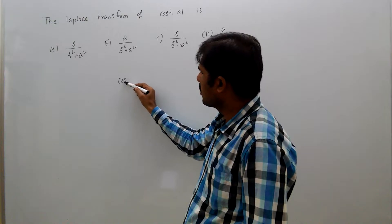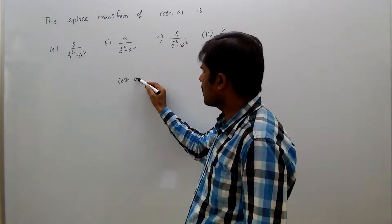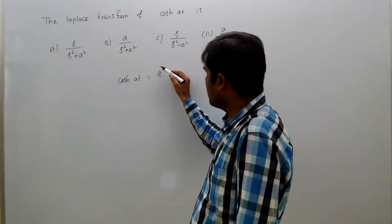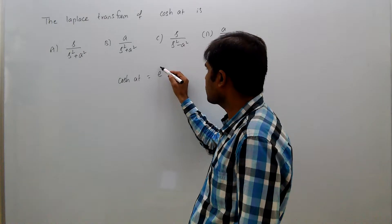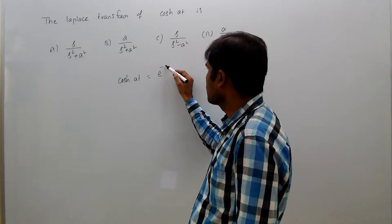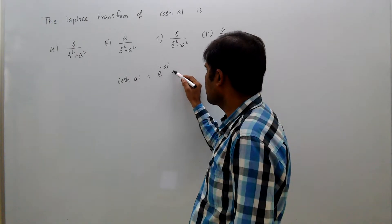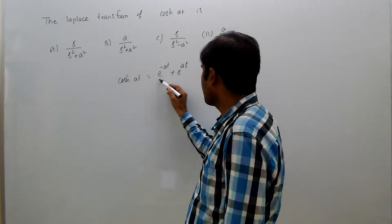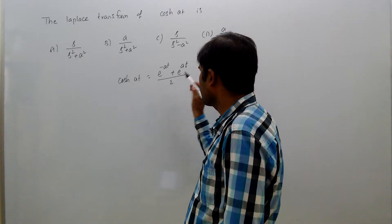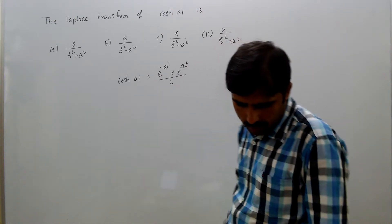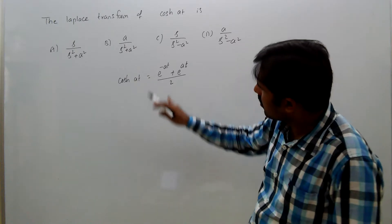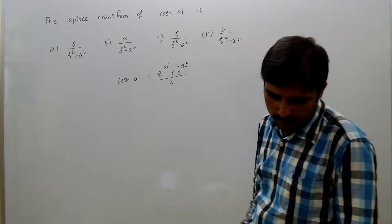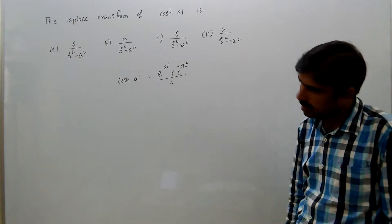We know cos(at) equals E power A·T plus E power minus A·T, divided by 2. That is, cos(at) equals (e^(at) + e^(-at)) / 2.